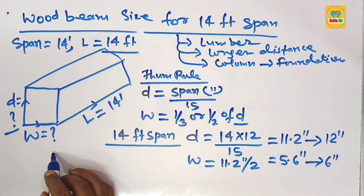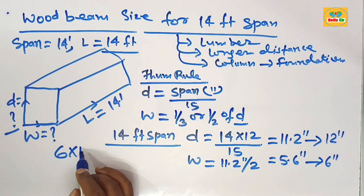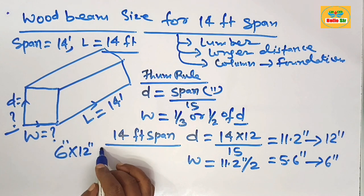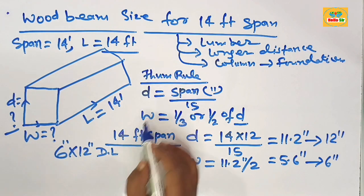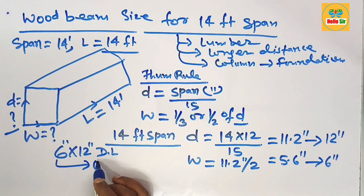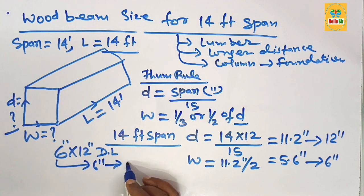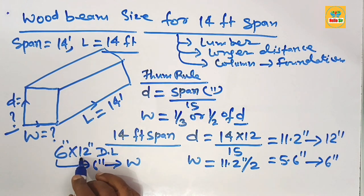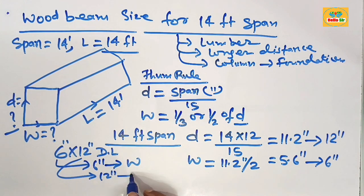means you need something like a 6 by 12 inch dimensional lumber as would be required to span 14 feet, in which 6 inches is the width section of the beam and 12 inches is the depth section of the beam. This